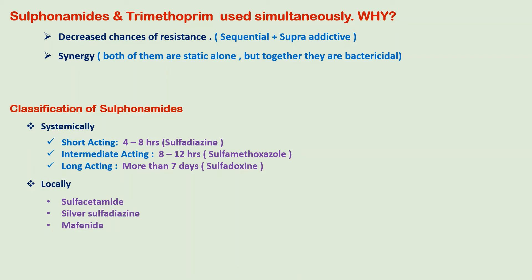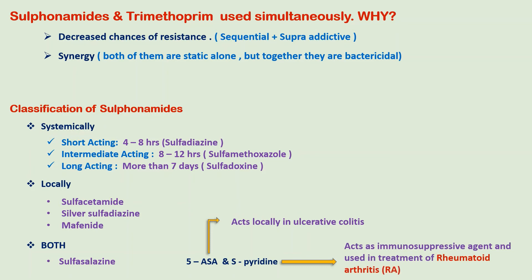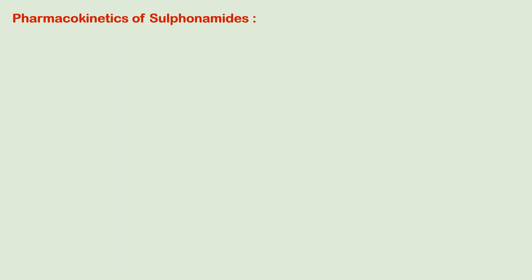Locally acting sulfonamides include sulfacetamide, silver sulfadiazine, and mafenide. Sulfonamides acting both systemically and locally include sulfasalazine, which is mainly used in ulcerative colitis and rheumatoid arthritis. Sulfasalazine gets split into sulfapyridine and 5-aminosalicylic acid by colon bacteria. The 5-aminosalicylic acid is the active compound in the colon, acting locally in ulcerative colitis, whereas sulfapyridine acts as an immunosuppressive agent and is hence used in the treatment of rheumatoid arthritis.